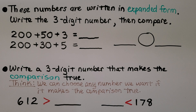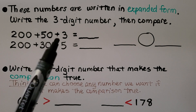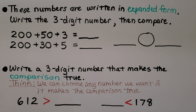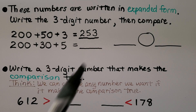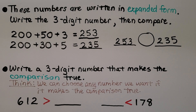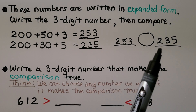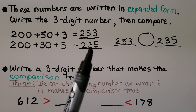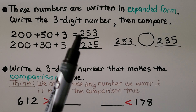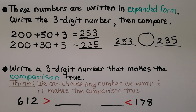These numbers are written in expanded form, so we need to write the three-digit number and then compare. We have 200 plus 50 plus 3, which we write as 253, and 200 plus 30 plus 5, which we write as 235. They both have a 2 in the hundreds place, so we compare the tens place. Five tens are greater than three tens, so 253 is the greater number. We write our symbol with the big open side facing 253. We can read this as 253 is greater than 235.